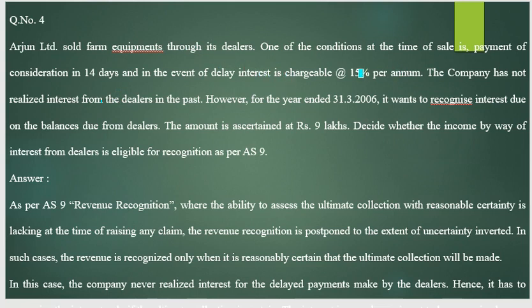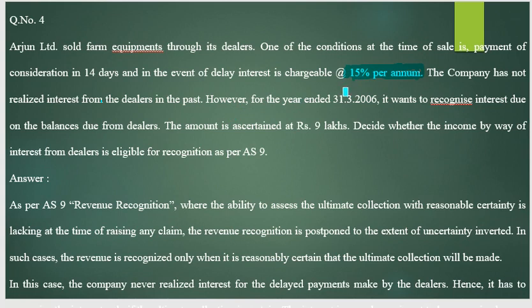In the event of delay, interest at 15 percent per annum is charged. If the dealer or agent is not able to sell within 14 days, Arjun Limited charges 15 percent interest. However, the company has not realized interest from dealers in the past, meaning all dealers previously sold within 14 days. For the year ending 31st March 2006...